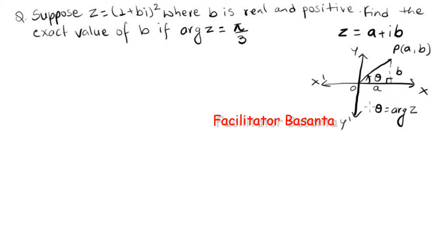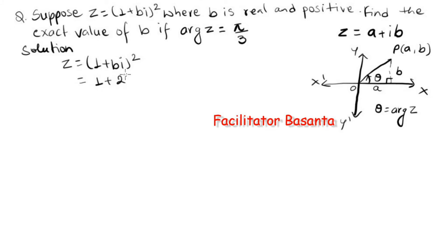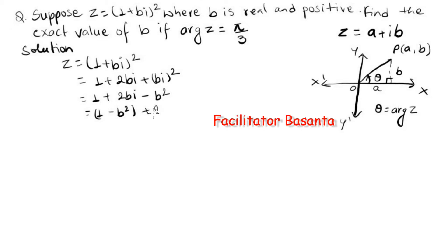The argument of z is the angle between the vector OP and the positive x-axis. Now for the solution — what is given is z equals (1 + bi)². We can expand this as 1 plus 2bi plus (bi)², which gives 1 plus 2bi plus b²i². Since i² equals minus 1, this becomes 1 minus b² plus 2bi.